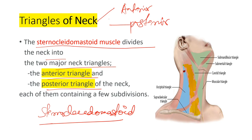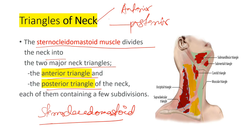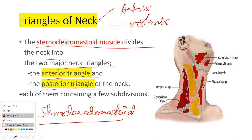This is the posterior triangle, and this is the sternocleidomastoid. This is the posterior triangle and these are the anterior triangles. Which muscle divides the neck into anterior and posterior? The sternocleidomastoid. This is the first thing you need to know — the sternocleidomastoid divides the neck into posterior triangle and anterior triangle.